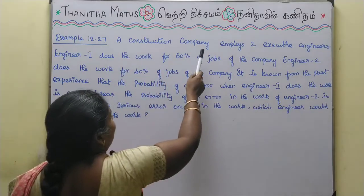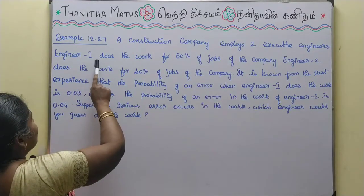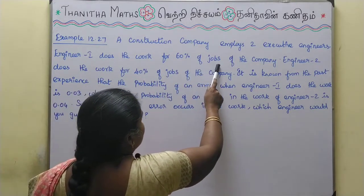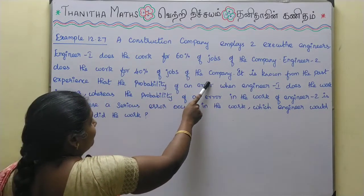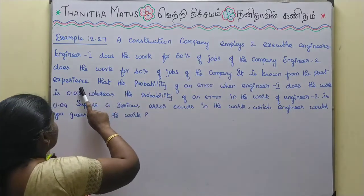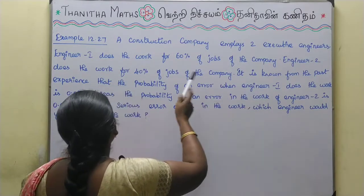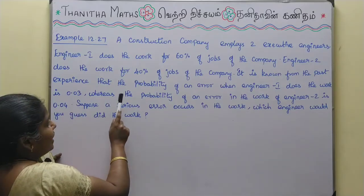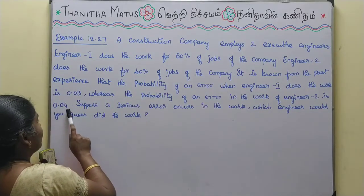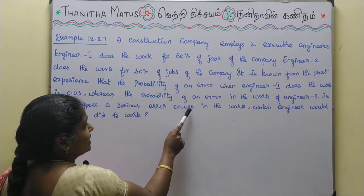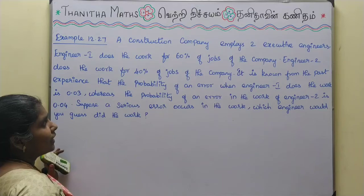A construction company employs two executive engineers. Engineer 1 does the work for 60% of jobs of the company. Engineer 2 does the work for 40% of jobs. It is known from past experience that the probability of an error when Engineer 1 does the work is 0.03, whereas the probability of an error in the work of Engineer 2 is 0.04. Suppose a serious error occurs in the work — which engineer would you guess did the work?